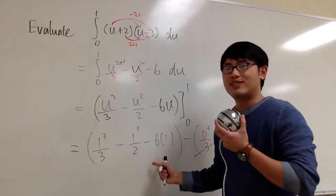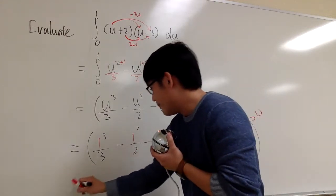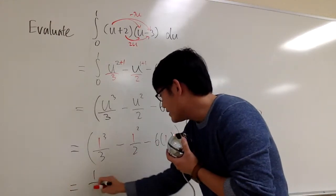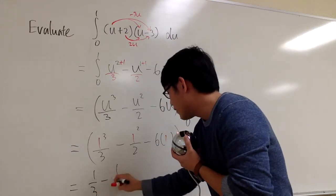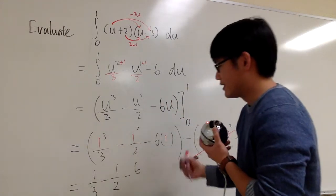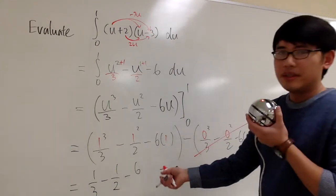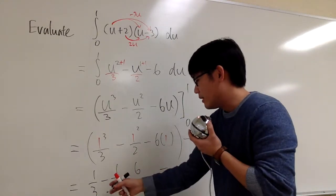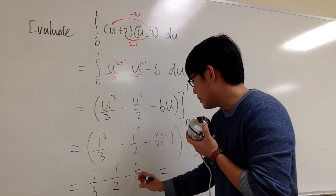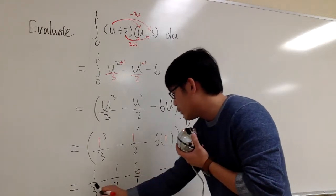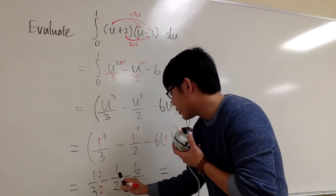And now we have to struggle with fractions right here. This is 1 third, of course. This is minus 1 half, of course. And this is minus 6, of course. And let's get a common denominator for all these things. The common denominator will be 6. So let me put a 6 as 6 over 1. I will need to multiply by 2 right here. Multiply by 3 right here.